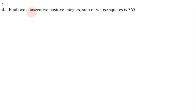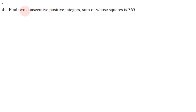Problem number 4: Find 2 consecutive positive integers, sum of whose squares is 365. So, find 2 consecutive positive integers. Consecutive numbers — these are adjacent numbers.